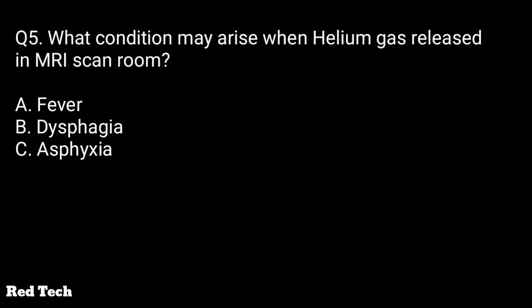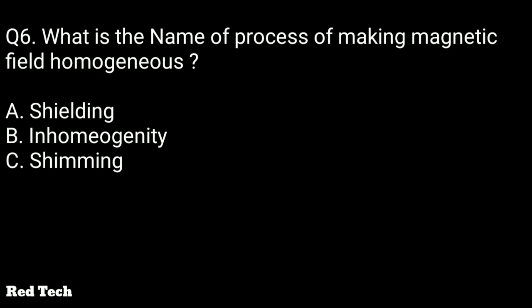Question number five: what condition may arise when helium gas is released in an MRI scan room? The options are fever, dysphagia, or asphyxia. The right answer is asphyxia. This mainly occurs in an emergency or accidentally when an object gets stuck in the MRI. Helium is released into the room, replacing the oxygen level, which causes asphyxia for anyone in the room.